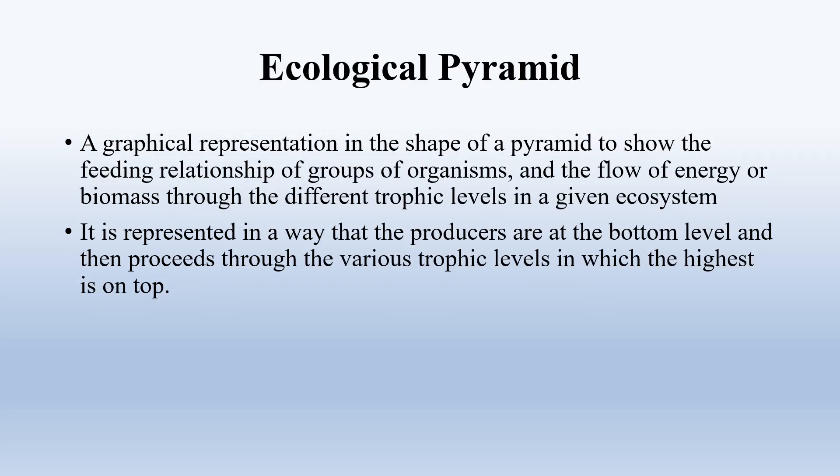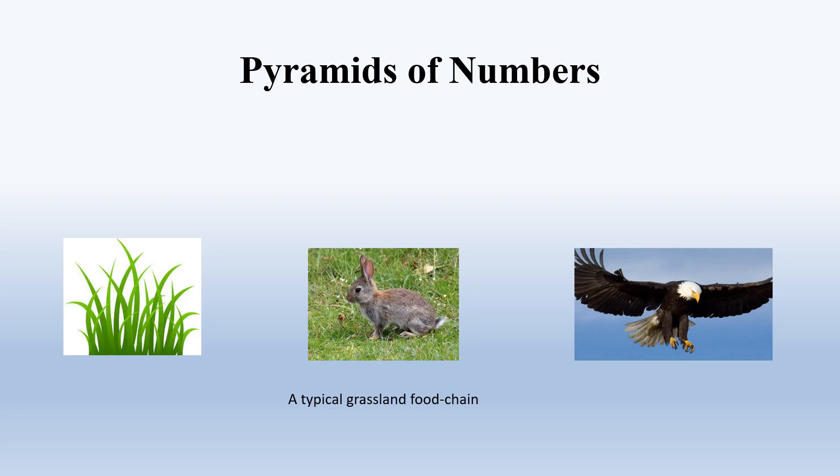An ecological pyramid is a three-dimensional triangular structure in the shape of a pyramid that shows the flow of energy from the level of a producer, which is at the base, and gradually up to the highest consumer level, which makes the apex or the topmost part of a pyramid. The various trophic levels are shown by the various levels in a pyramid.